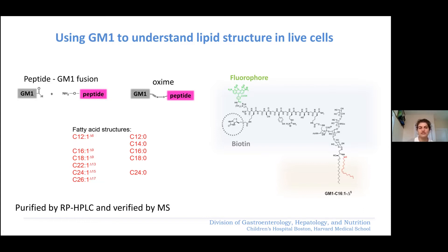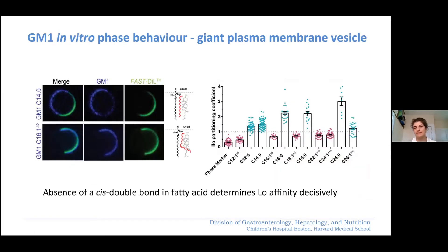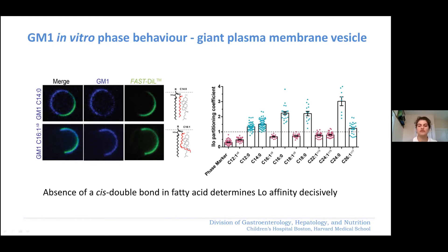As a first test of their overall biophysical behavior, we chose an in vitro system using giant plasma membrane vesicles — vesicles that are forcibly blebbed off the plasma membrane. They retain the compositional diversity of the plasma membrane, but because there's no structuring actin cytoskeleton, the membrane spontaneously phase separates into the liquid ordered and liquid disordered phase. Using a phase marker, you can determine the in vitro phase preference of your molecule of choice.